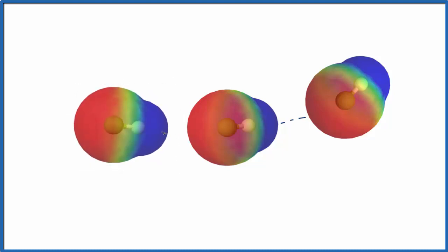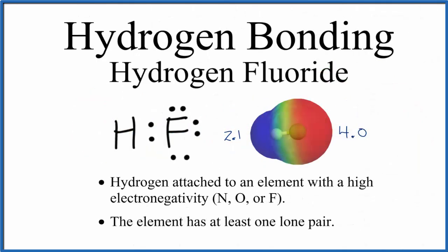To recap, we have this big difference in electronegativity between our hydrogen and our very electronegative fluorine, and we have at least one lone pair—in this case three lone pairs. We're going to have hydrogen bonding between HF molecules. Note that HF could also form hydrogen bonds with other molecules that satisfy this criteria here.